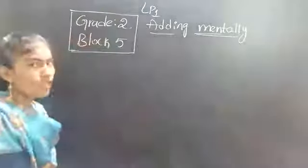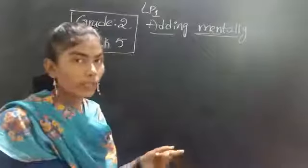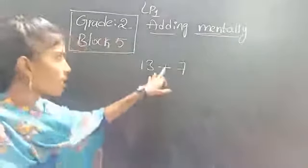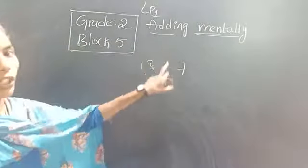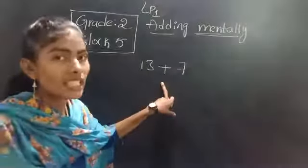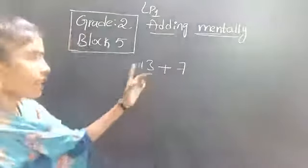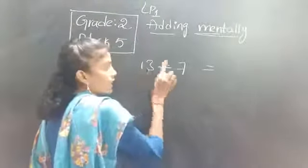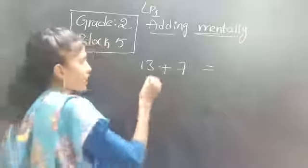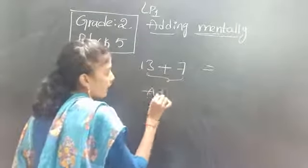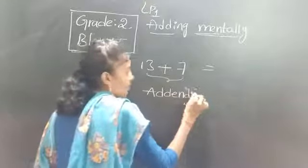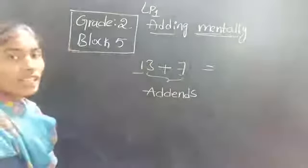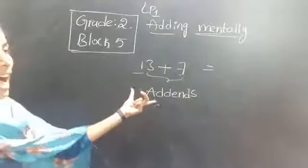So let us take one example to understand how we have to add numbers mentally. Here I give you 13 plus 7. Plus is the symbol of addition — children, we already know that. The numbers which we are adding are called addends. Here 13 and 7 are the addends; this is the first addend and this is the second addend.